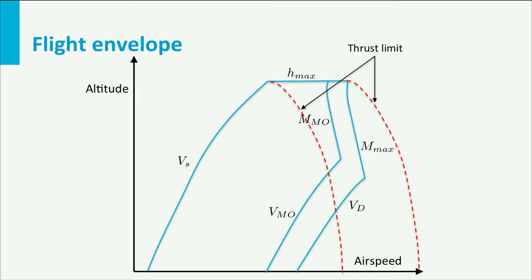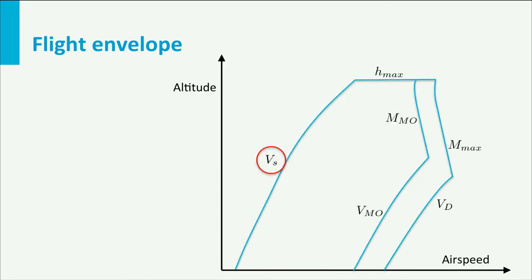Let's start with the stall speed of the aircraft. As you can see, it increases with altitude. Furthermore, this limit is dependent on the aircraft's weight. In equilibrium lift should equal weight and from that we can derive the equation for minimum airspeed. A larger weight results in a higher stall speed. So the worst case stall speed occurs at maximum aircraft weight.